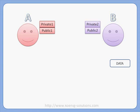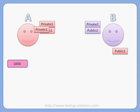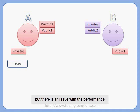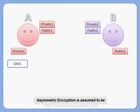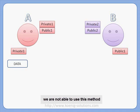Similarly, B can obtain A's public key to encrypt and send the response back to A, which A can decrypt using its own private key. However, there is an issue with performance — asymmetric encryption is assumed to be a thousand times slower than symmetric encryption, due to the complexity of mathematics involved in public-private key pairs. For this reason, we are not able to use this method for real-time communication.